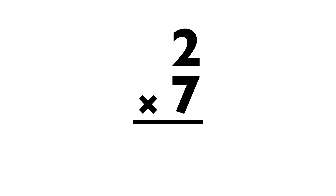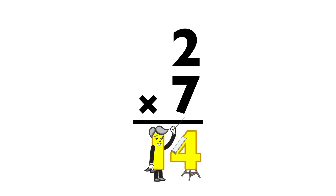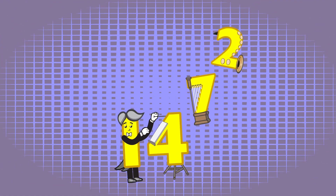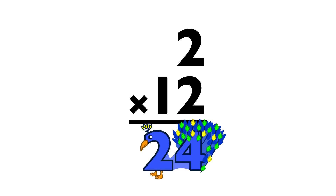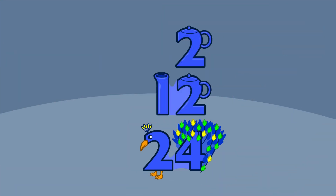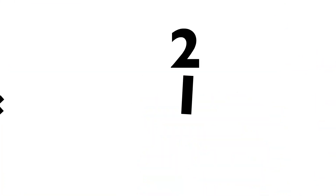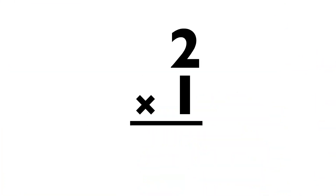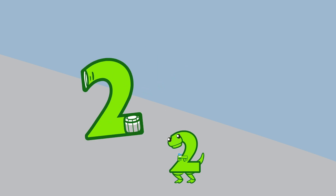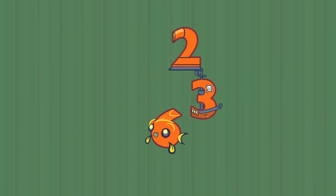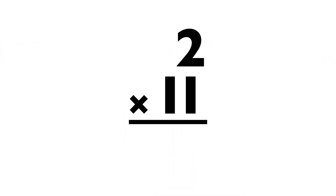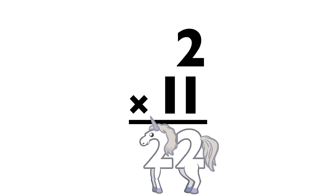2 times 7 equals... 14. 2 times 12 equals... 24. 2 times 1 equals... 2. 2 times 3 equals... 6. 2 times 11 equals... 22.